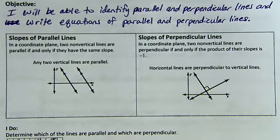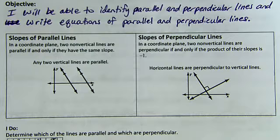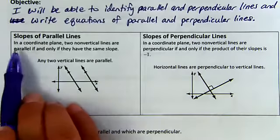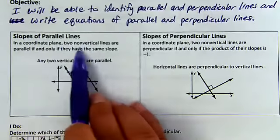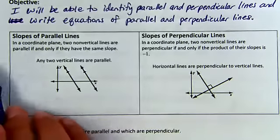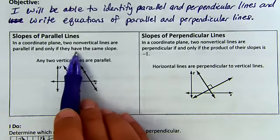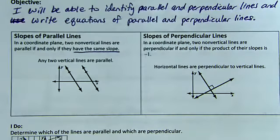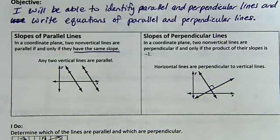We have two theorems that tell us exactly what we need to know about the slopes of parallel lines and the slopes of perpendicular lines. The slopes of parallel lines are probably the easiest ones because they are identical. In a coordinate plane, two non-vertical lines are parallel if and only if they have the same slope.